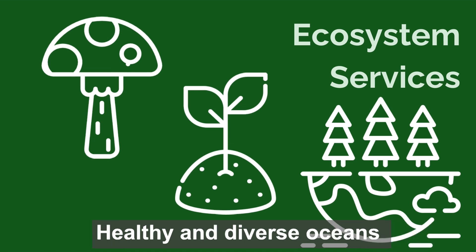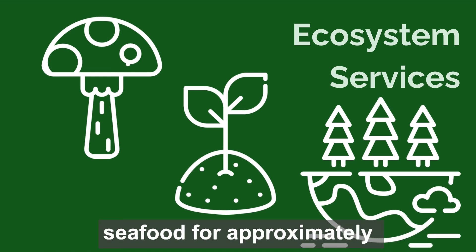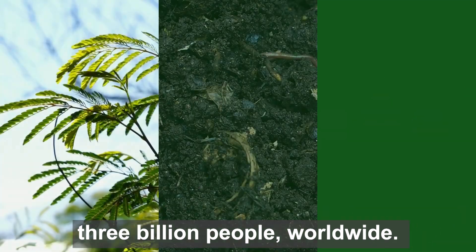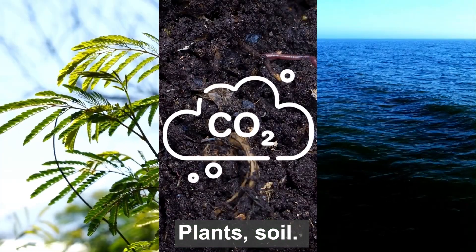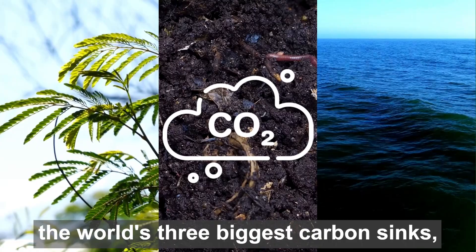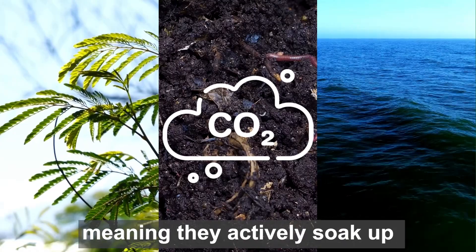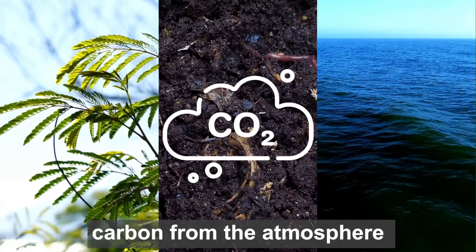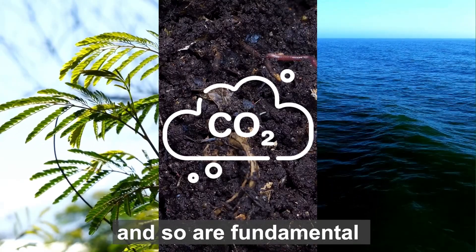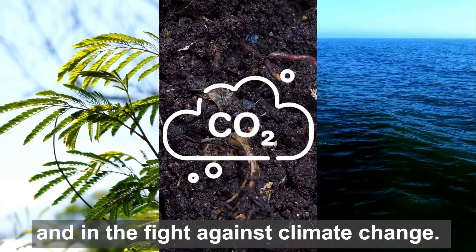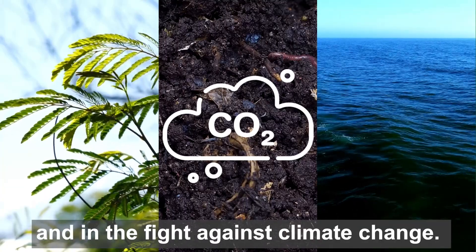Healthy and diverse oceans provide fish and other seafood for approximately 3 billion people worldwide. Plants, soil, and the ocean all represent the world's three biggest carbon sinks, meaning they actively soak up carbon from the atmosphere, and so are fundamental for regulating climate and in the fight against climate change.